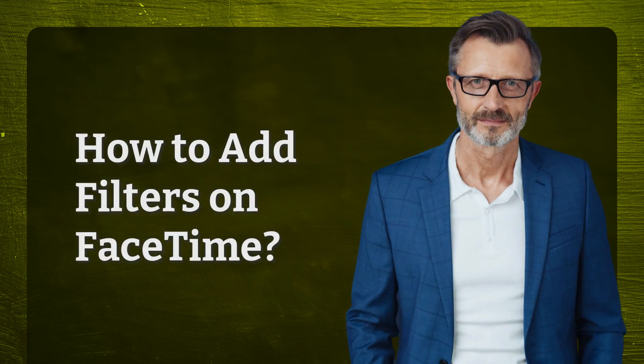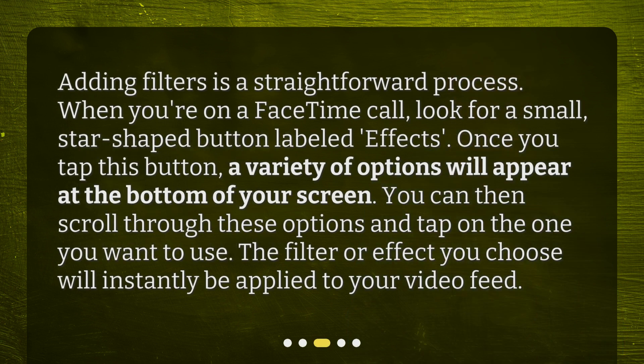How to add filters on FaceTime? Adding filters is a straightforward process. When you're on a FaceTime call, look for a small, star-shaped button labeled Effects. Once you tap this button, a variety of options will appear at the bottom of your screen. You can then scroll through these options and tap on the one you want to use. The filter or effect you choose will instantly be applied to your video feed.